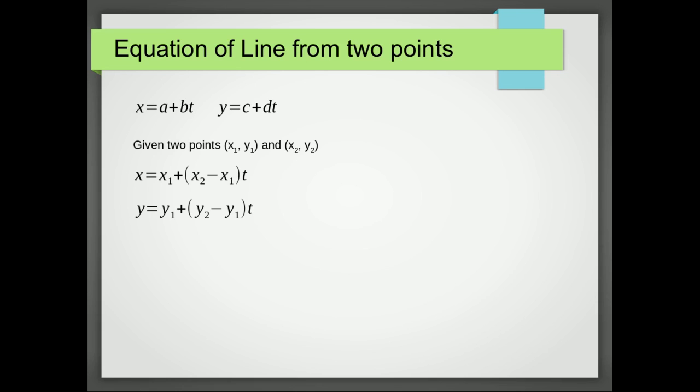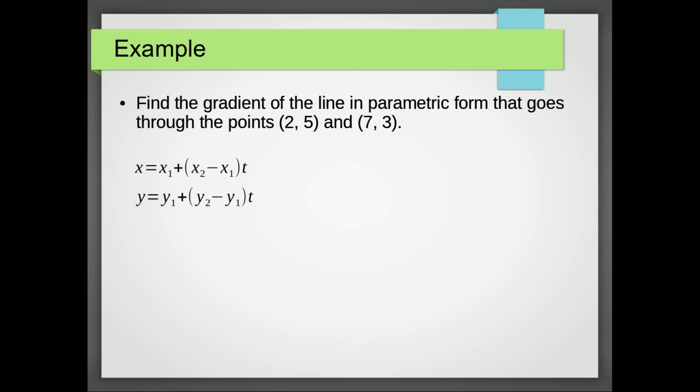So let's see an example of that one. So here we can see the x₁ is 2 and the x₂ is 7. So we get x equals 2 plus (7 minus 2)t. And a similar method is used to find the function of t for y. Simplifying those expressions gives us the equation of our line in parametric form.